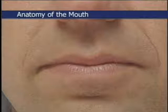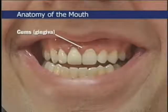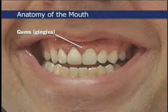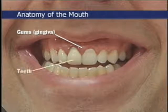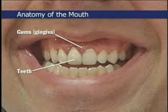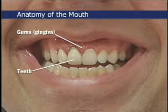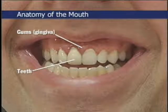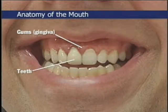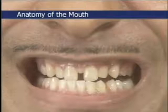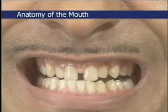The lips are muscular folds surrounding the entrance to the mouth. When the mouth is open, the gums or gingival mucosa and teeth become visible. The gingiva are firmly attached to the teeth and to the maxilla or mandible in which they are seated. In lighter-skinned people the gingiva are pale or coral pink and lightly stippled; in darker-skinned people the gingiva may be diffusely or partly brown.